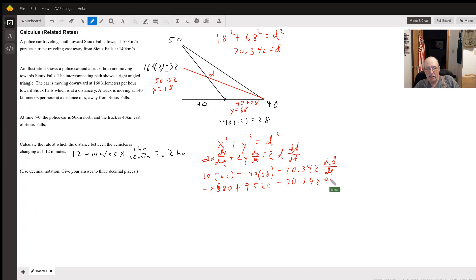9520 equals 70.342 dd/dt. So I got 9520 minus 2880, that gives me 6640 equals 70.342 dd/dt. So now we're going to solve for dd/dt.